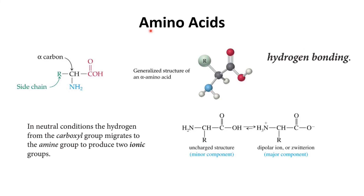Another biomolecule which is solid is the amino acid. The basic structure of an amino acid has a side chain and an alpha carbon, with an OH group and an NH group which lead to hydrogen bonding. In neutral conditions, the hydrogen from the hydroxyl group migrates to the amine group, making it a dipolar ion — meaning one side is positively charged and another is negatively charged. This dipolar ion leads to strong interactions between molecules, making the amino acid solid.